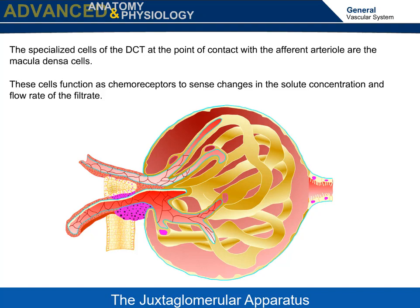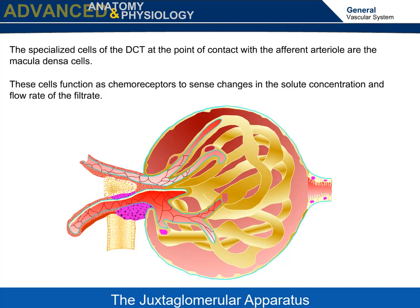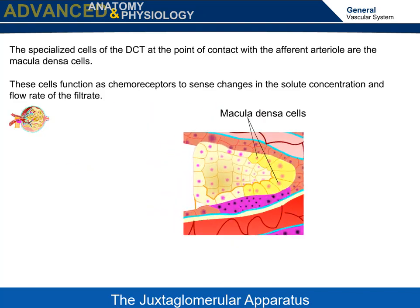These cells function as chemoreceptors to sense changes in the solute concentration and flow rate of the filtrate. Here's a close-up of the macula densa cells.